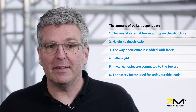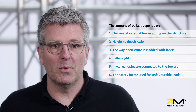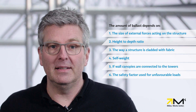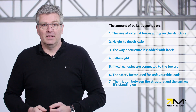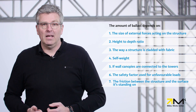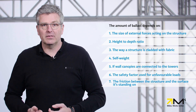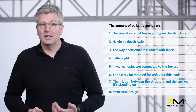Six, the safety factor used for unfavorable loads. This can vary between 1.1 and 1.5 depending on the type of load or applicable standard. Seven, the friction between the structure and the surface it's standing on. If the surface has a low friction factor, the wind can easily move it. Eighth and last, structural design. There are different options for stabilisation. For example, different guy wire arrangements have different effects on the amount of ballast needed.